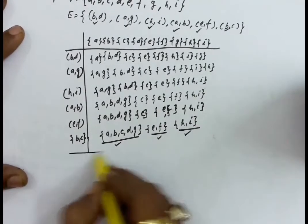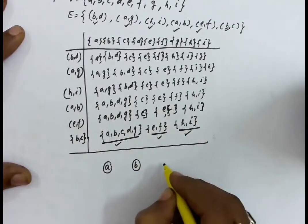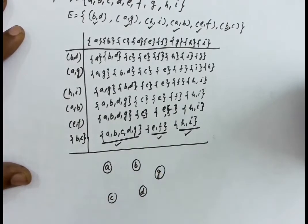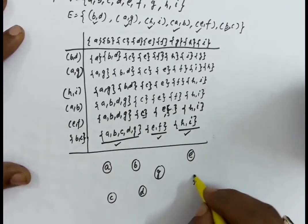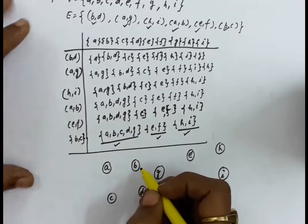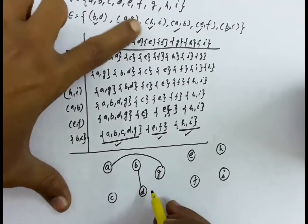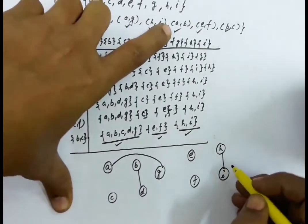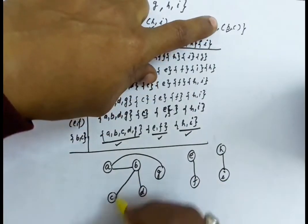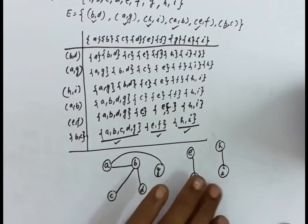Diagrammatically you can also see this. The first connected component contains A, B, C, D, and G. The second contains E and F. The third contains H and I. Connecting the edges B-D, A-G, H-I, A-B, E-F, and B-C, you can see that these three parts are distinct — so we have three different connected components in this graph.